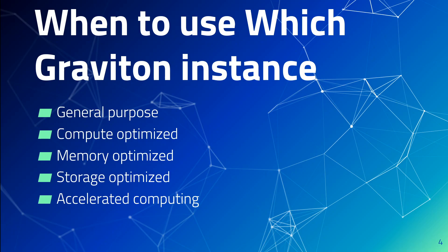If your applications are more geared towards in-memory caches, open-source databases with huge workloads, and real-time analytics, then use memory optimized Graviton. If your main requirement is NoSQL databases, key-value stores, search engines like ElastiCache and OpenSearch, and streaming, then go for storage optimized. If your use case is purely geared towards machine learning and graphics, then use the accelerated computing type for Graviton.